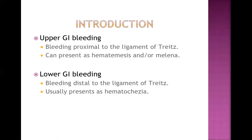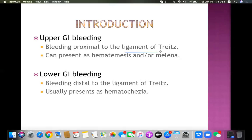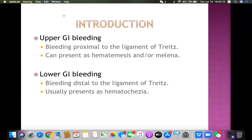In the beginning we have to differentiate what is upper GI bleeding and what is lower GI bleeding. Upper GI bleeding is bleeding which occurs proximal to the ligament of Treitz, and lower GI bleeding is bleeding which occurs distal to the ligament of Treitz. Now, what is this ligament of Treitz? Let's talk about this quickly, otherwise all this classification is very confusing.